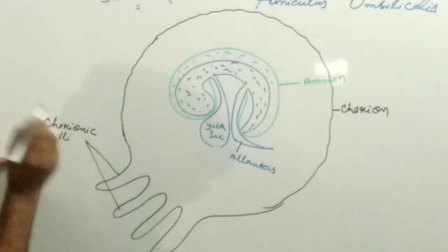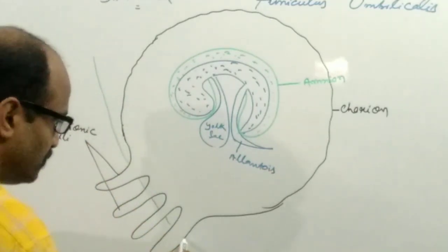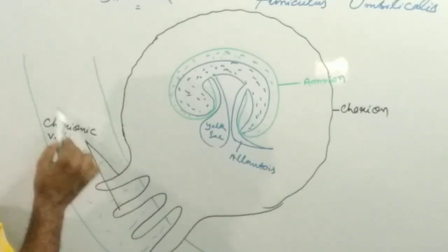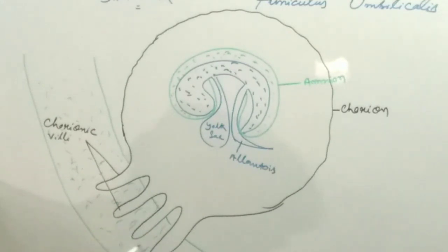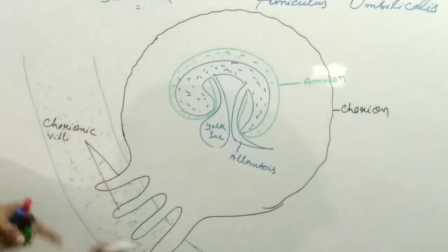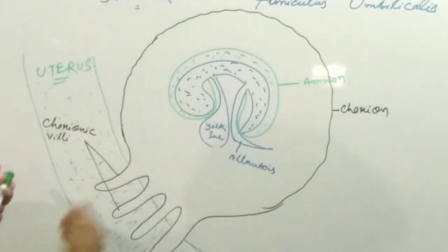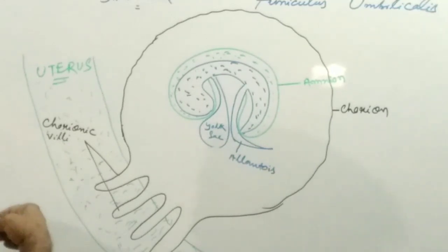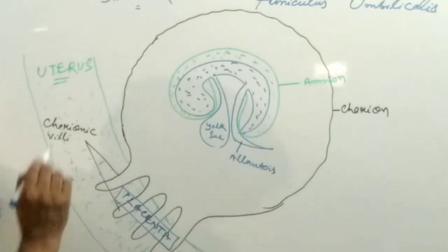The chorionic villi enter into the endometrial wall of the uterus and a connection is formed between the chorion and the endometrial wall. The chorion with its chorionic villi enters the uterine wall and forms a connection between the fetus and the endometrial wall. Such a connection is known as the placenta.